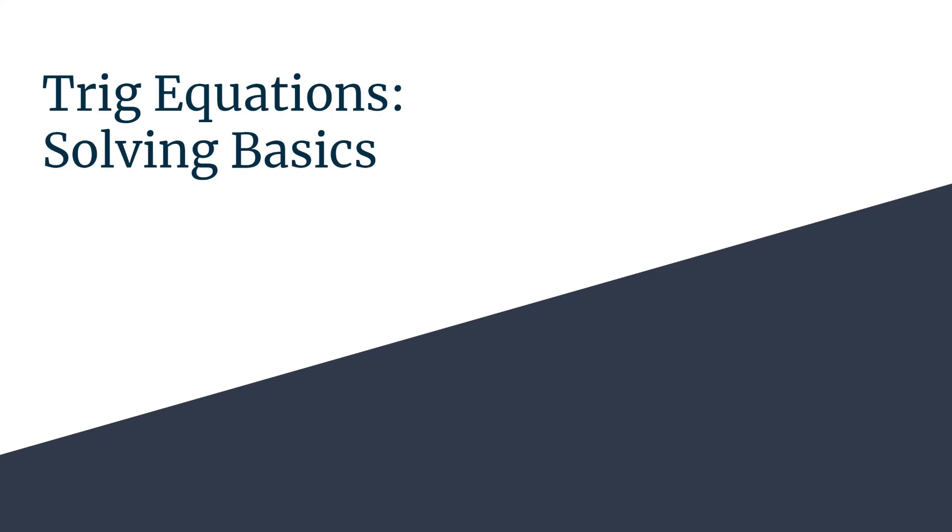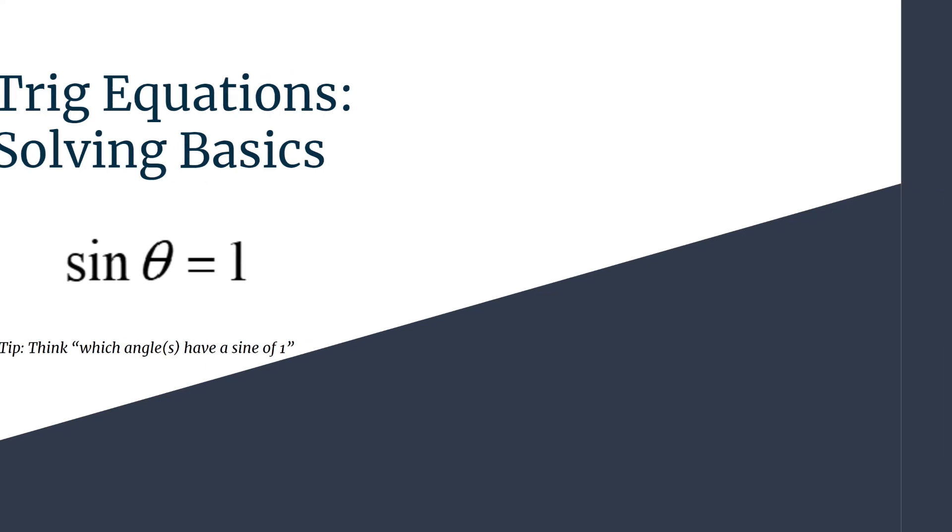In this solving basics for trig equations, we're going to look at the equation sine theta equals one. And so when we're solving this, we should think which angle has a sine of one. So solving equations is very similar to finding exact values. You're just working in the opposite direction. So let's see what this will look like.